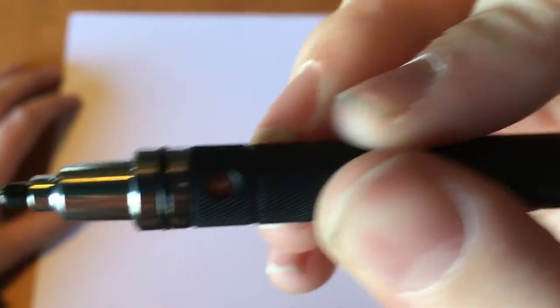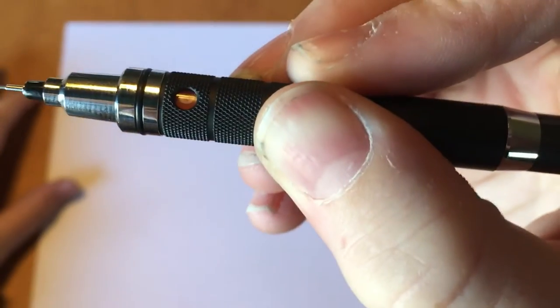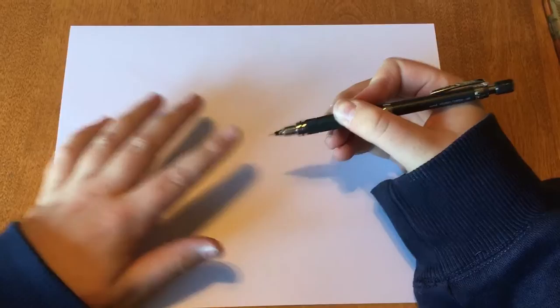Do you see that little white part? That little dot right there? That turns every time you put pressure on it, so you basically always have a new edge on the lead.